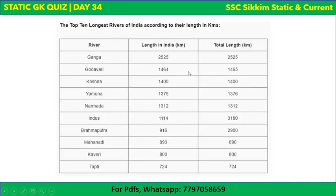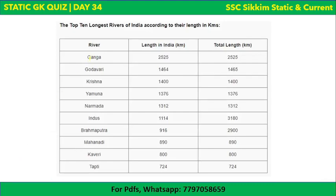The top 10 longest rivers of India in order: 1st Ganga, 2nd Godavari, 3rd Krishna, 4th Yamuna, 5th Narmada, 6th Indus, 7th Brahmaputra, 8th Mahanadi, 9th Kaveri, and 10th Tapti.